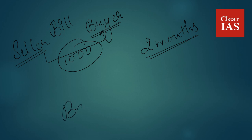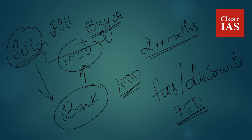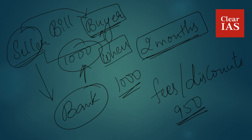Say the seller is in need of money today and cannot wait 2 months. So he goes to a bank with this bill asking for money. What the bank does is it does not give the full amount of 1000 rupees to the seller — it charges a fee, or discounts the bill, giving only 950 rupees instead. The seller benefits because he is doing his business and receiving the amount. The buyer benefits because he gets the goods and does not have to pay the seller beforehand — he gets the period of 2 months to pay. So both the buyer and the seller benefit through this discounting of bills.